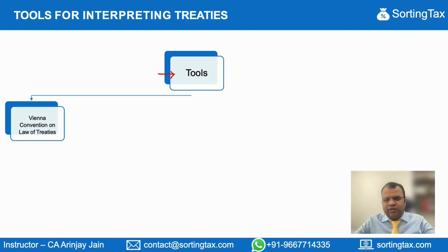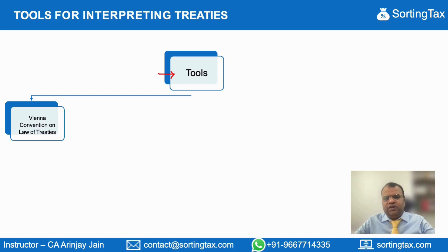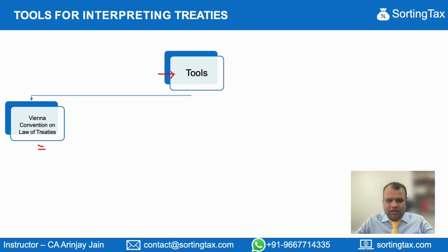This is not exclusively for Double Taxation Avoidance Agreements, but it contains certain principles as to if there is a treaty between two countries and that has to be interpreted, how it should be done. We are going to see more on the Vienna Convention on Law of Treaties in the subsequent slides.